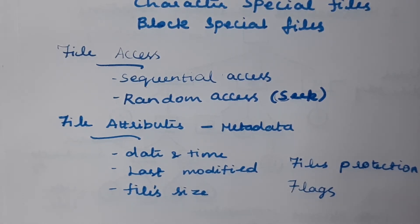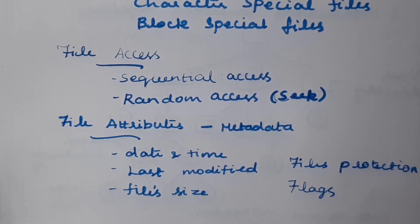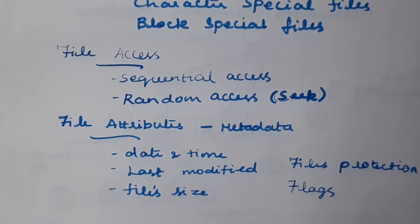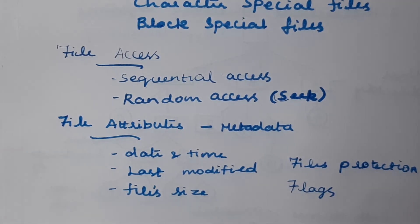In this video we will discuss file attributes. In addition to the file name and the file content, we also need to include some other properties of the file, such as date and time of creation, when the file was recently modified, the size of the file, protection information, and flag values. All of these can be represented in file attributes.